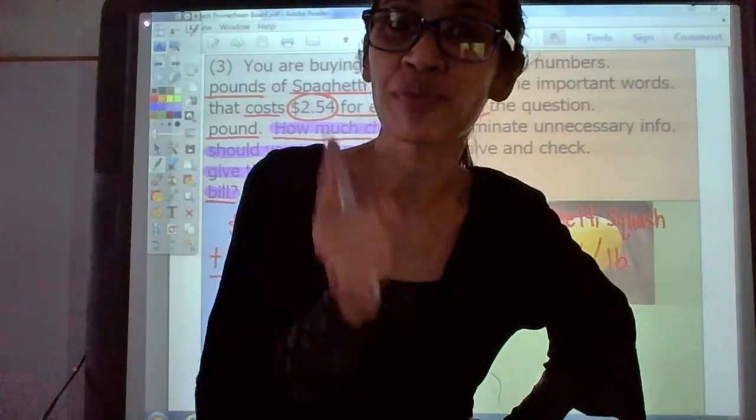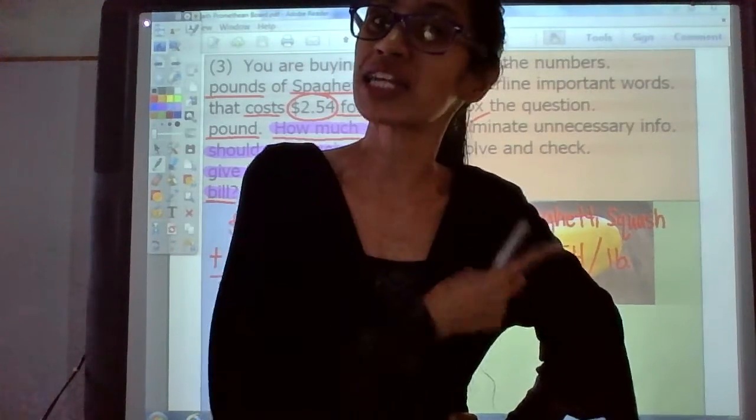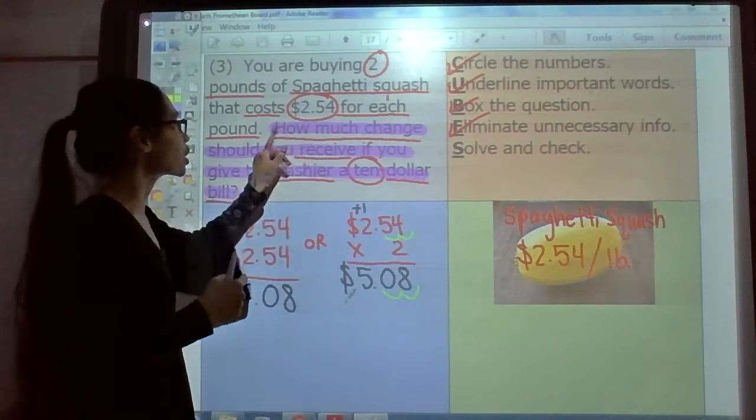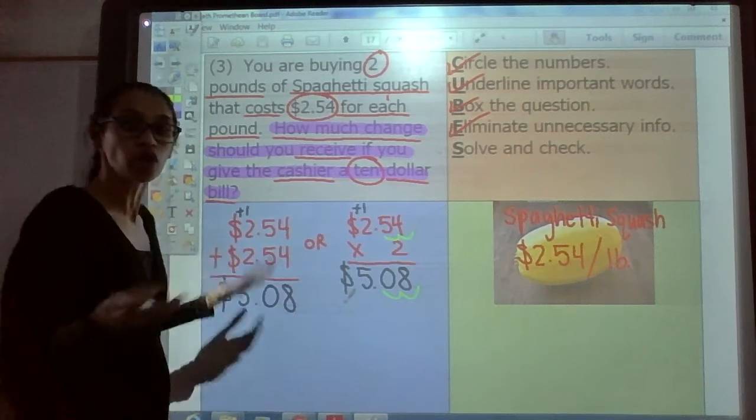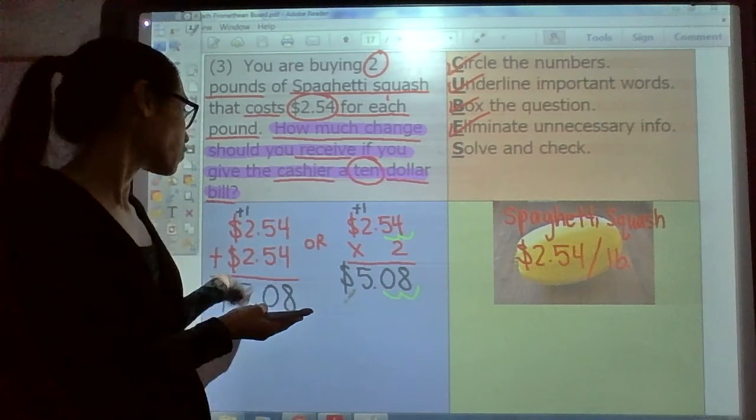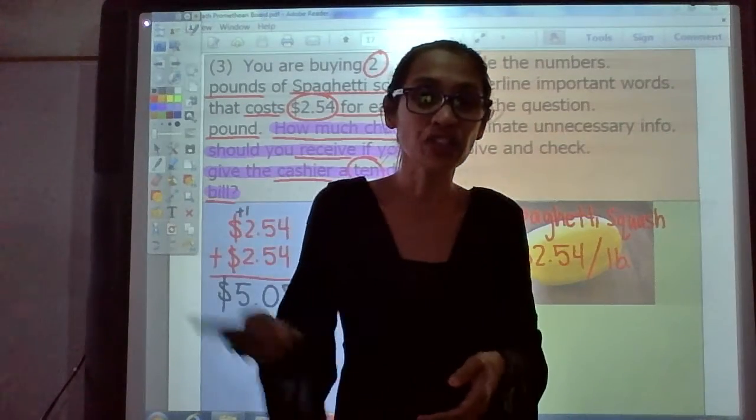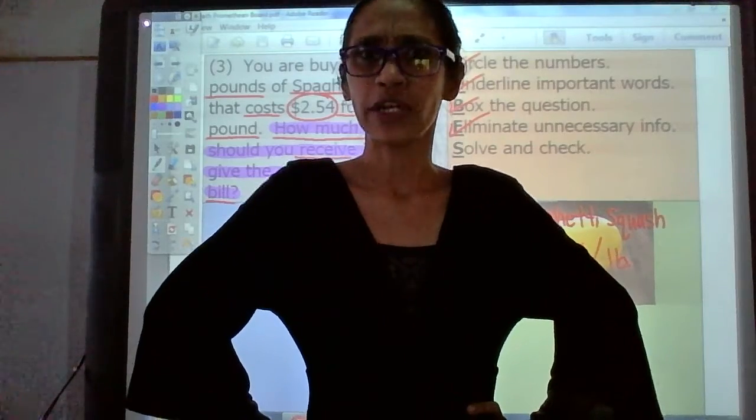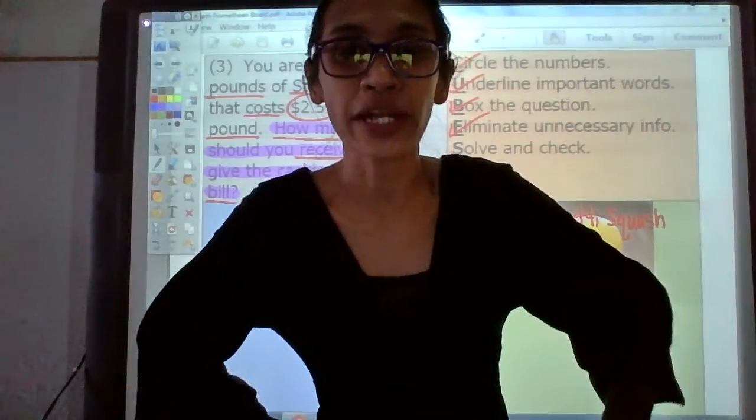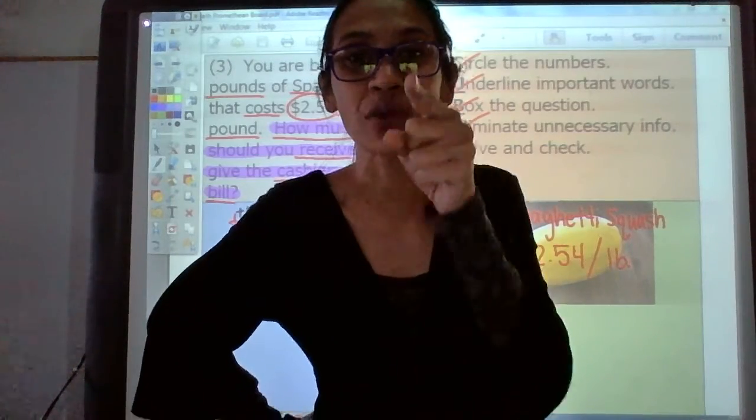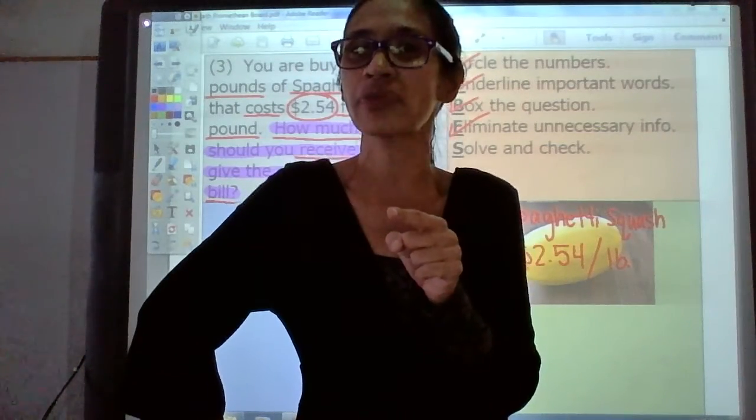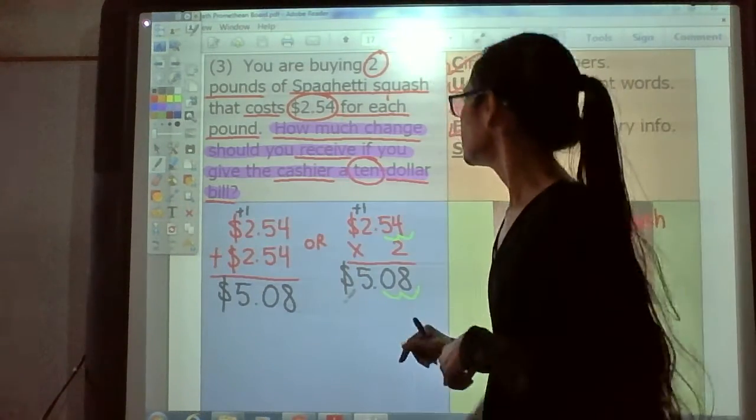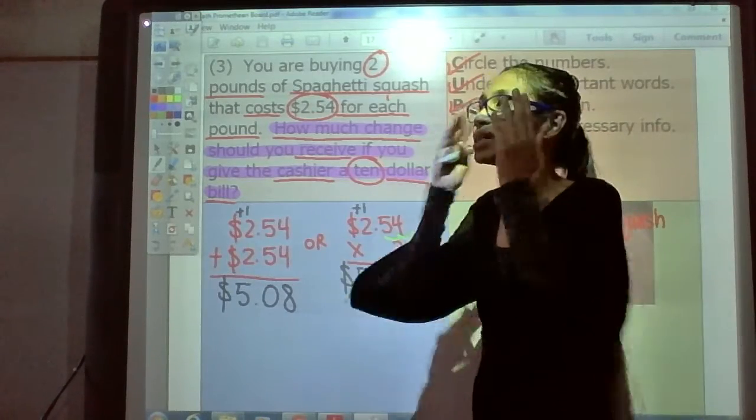But we're not done. Because remember, this is a multi-step problem. That means it has more than one step. This one has two steps. The next part of the problem is to figure out how much change we should receive. So, if you're going to the store and you're buying two pounds of this and it's $5.08 and you give the cashier $10, that cashier better give you some money back. If not, they're not doing their job right. And you'll be like, this person might need to get fired. And you can take that job one day when you're old enough because you know how to do math. Yes, that's right. Because you're smarter. You're so smart.